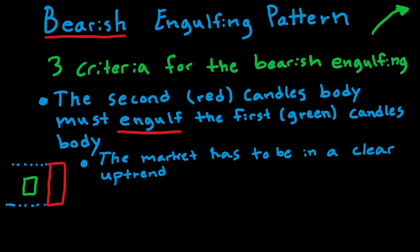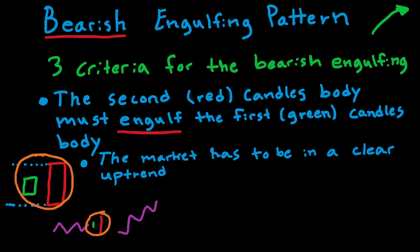The second criteria is that the market has to be in a clear uptrend. Even though you can find patterns that look like this anywhere on the chart, in order for it to be a significant and valid bearish engulfing pattern, we want the pattern to appear at the top of an uptrend. A pattern occurring during sideways movement is not as significant. If instead we have a clear upwards trend and the pattern appears at the top, it is much more significant and considered a valid bearish engulfing pattern.